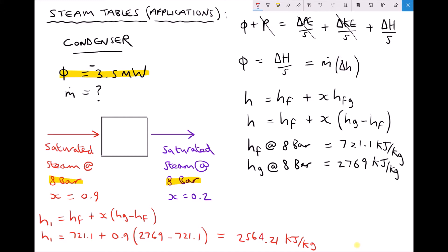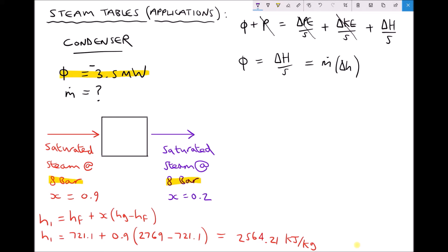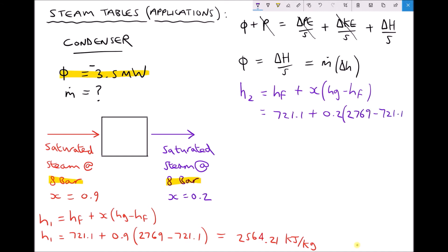For H2, the enthalpy of steam exiting the condenser at 8 bar with dryness fraction x=0.2, we use the same HF and HG values: H2 = HF + x·(HG − HF) = 721.1 + 0.2×(2769 − 721.1) = 1130.68 kJ/kg.